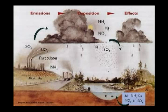This is the process by which acid rain is formed. SO2 emissions from factories condense and combine with water, which then fall down as rain.